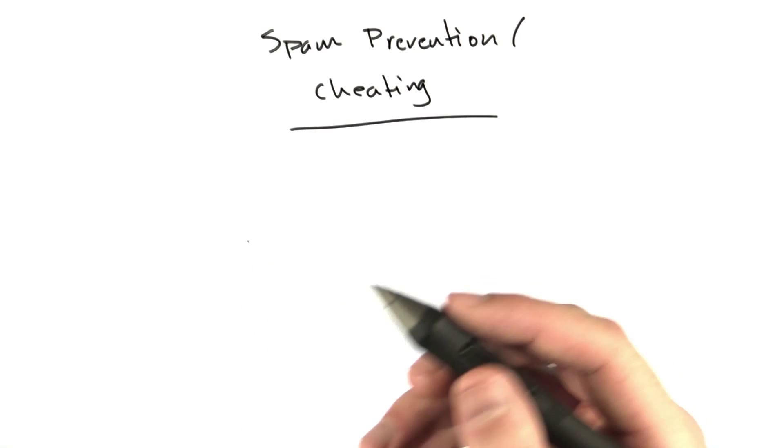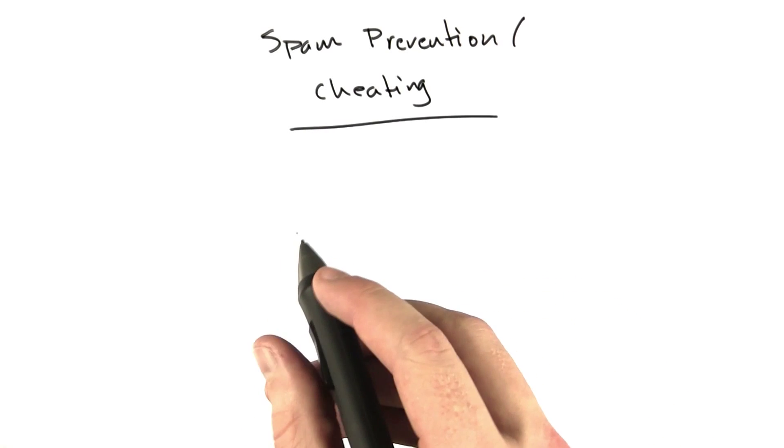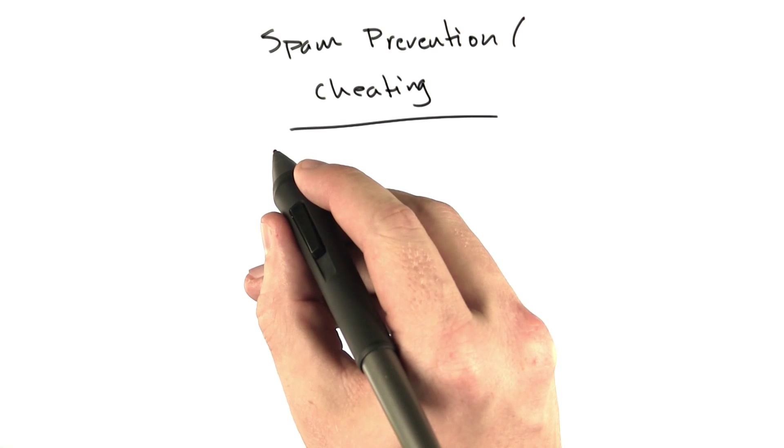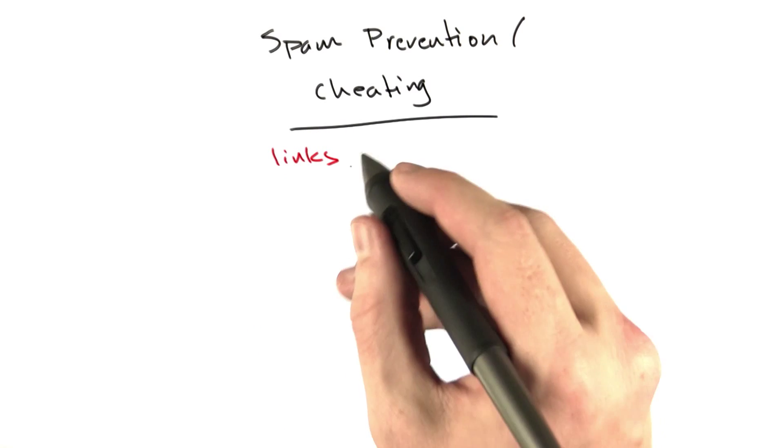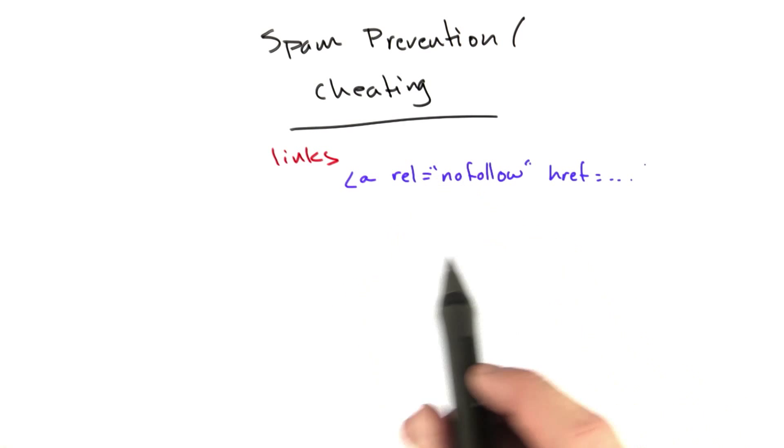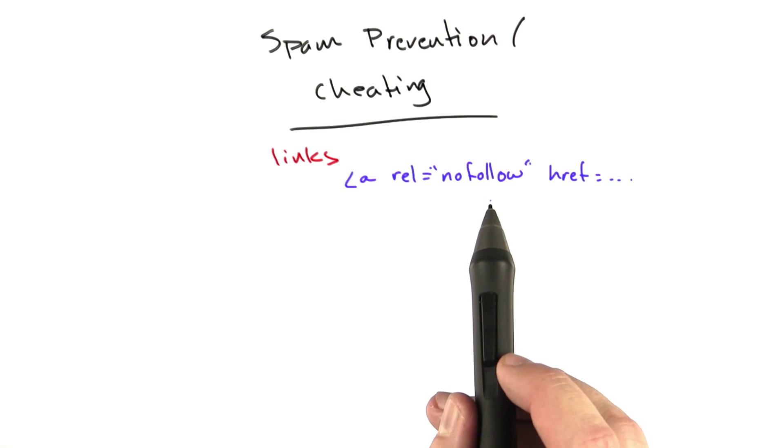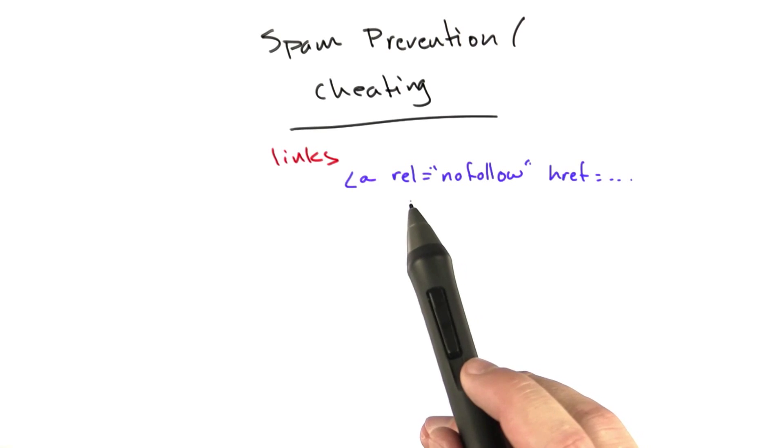But at the time, if you understand spammers' motivations, it's really easy to prevent. A spammer's motivation is basically they want links. But an easy way to prevent their links from providing any value is to add an attribute to your anchor tag that looks like this. So if you have a link with this extra attribute rel equals nofollow, it basically tells Google this link shouldn't be followed for search quality purposes.